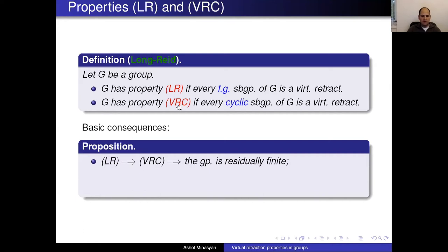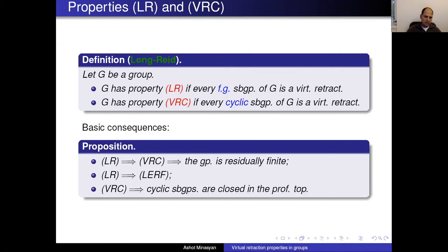By definition LR is stronger than VRC, so LR implies VRC. It's not hard to show that any group with VRC must be residually finite, and every cyclic subgroup will be closed in the profinite topology. LR implies that the group is LERF — locally extended residually finite — meaning every finitely generated subgroup is closed in the profinite topology, also called subgroup separable, i.e., every finitely generated subgroup is the intersection of subgroups of finite index.